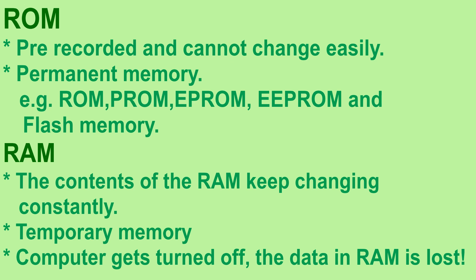RAM is the other type of memory. It is used by the CPU to read and write data and instructions while executing a program. The contents of the RAM keep changing constantly, hence it is a temporary memory. That is why it becomes essential for us to save things to the hard disk. If the computer gets turned off, the data in RAM is lost.